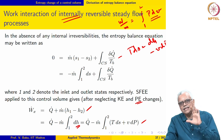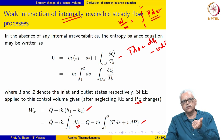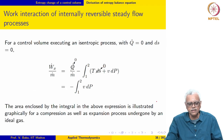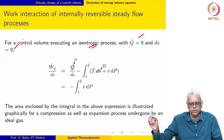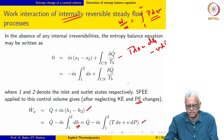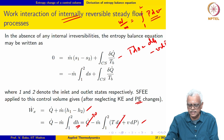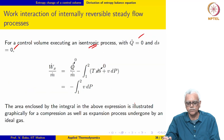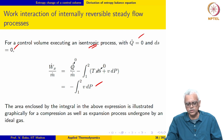Let us simplify this expression for a reversible adiabatic process and for a reversible isothermal process. For a control volume executing an isentropic process, Q-dot equals zero and ds is also equal to zero. So this expression simplifies to W_x-dot equal to minus M-dot times the integral of V dp, or equivalently W_x-dot over M-dot equals minus the integral from 1 to 2 of V dp.